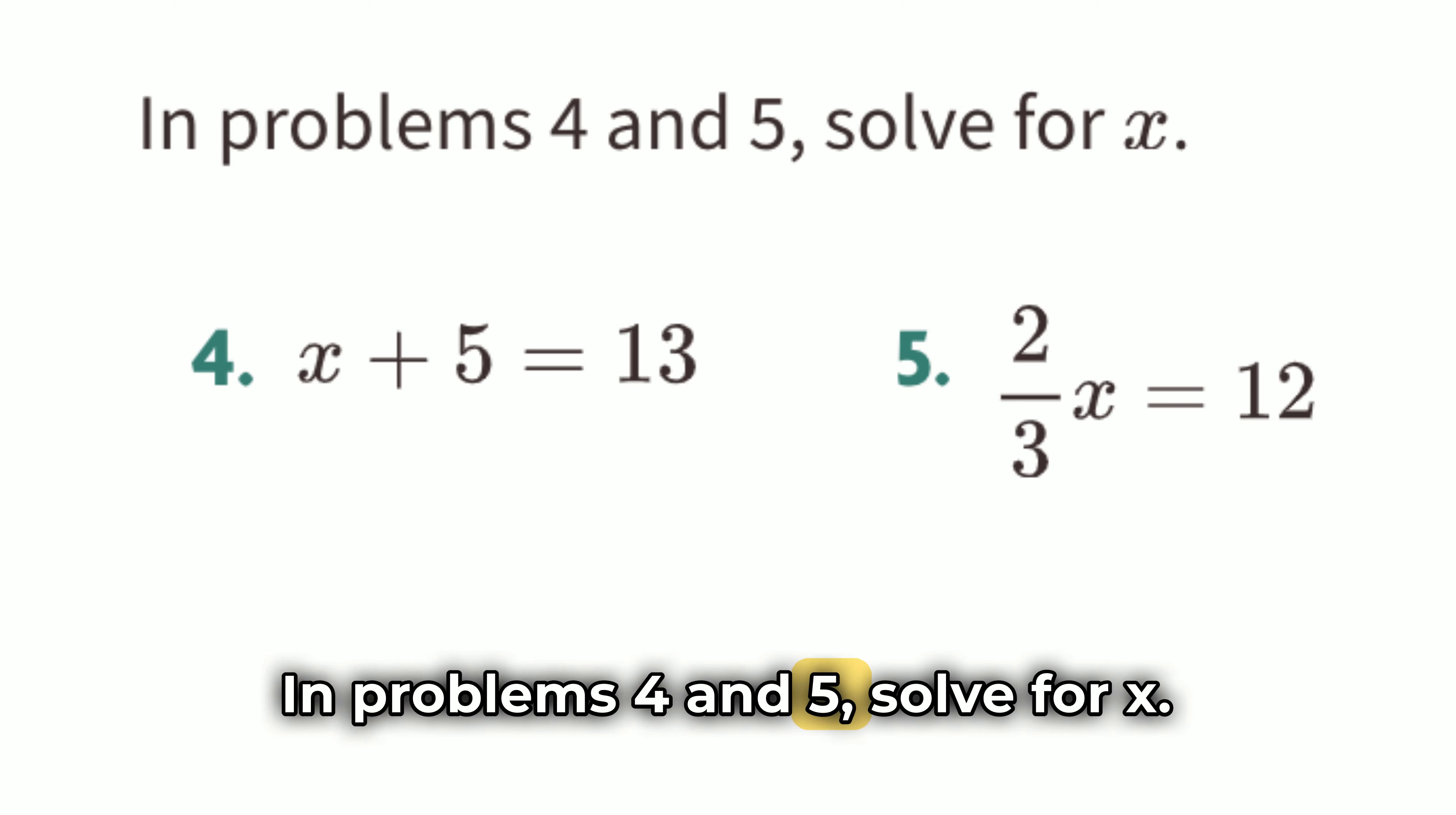In problems 4 and 5, solve for x. Problem 4. x plus 5 equals 13. To solve the equation x plus 5 equals 13, the goal is to find out what number x must be so that when you add 5 to it, the result is 13. Let's go through the steps. Step 1. Understand the equation. The equation says that some number x, when added to 5, equals 13. We need to figure out what x is.